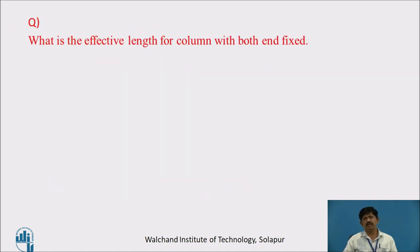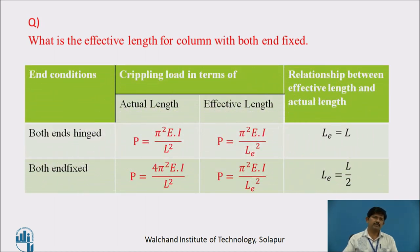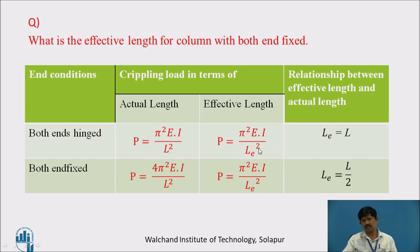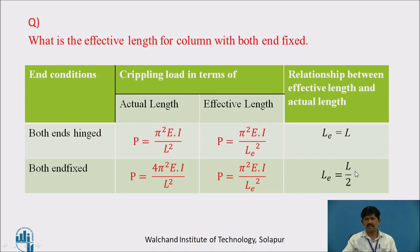For the effective length when both ends are fixed: when both ends are hinged, the crippling load is P = π²EI/L², and Euler's formula gives P = π²EI/L_eff², so L_eff = L. When both ends are fixed, P = 4π²EI/L². Comparing with Euler's formula P = π²EI/L_eff², we get L_eff = L/2.